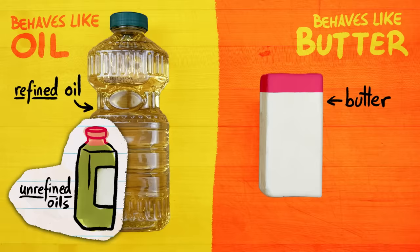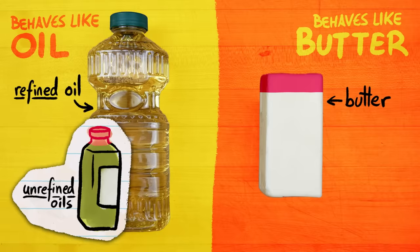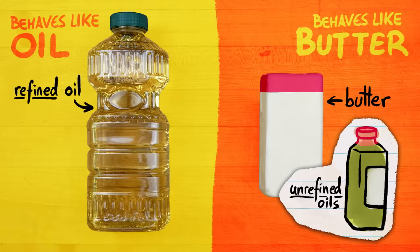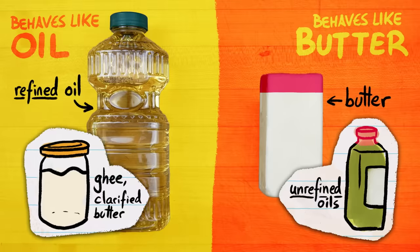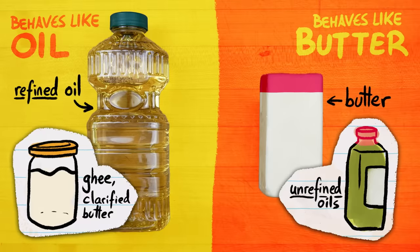At least differently than refined cooking oils like vegetable or canola oil. Unrefined oils like olive and sesame oil also contain additional compounds, so they actually act more like butter when you're cooking. And ghee and clarified butter, which is butter with a lot of that extra stuff removed, actually behave more like refined oils. So keep that in mind as we forge ahead.